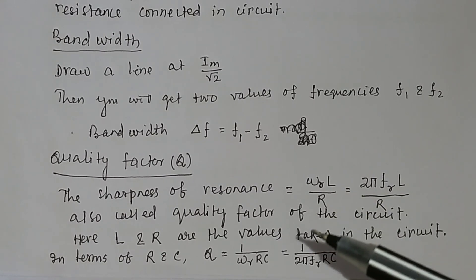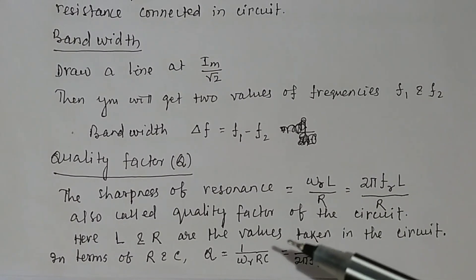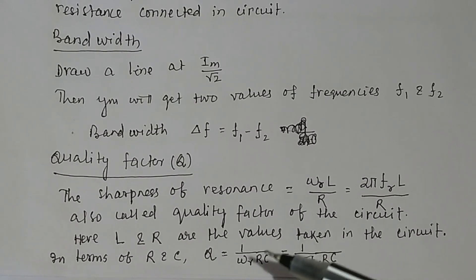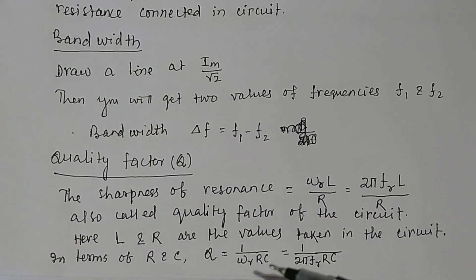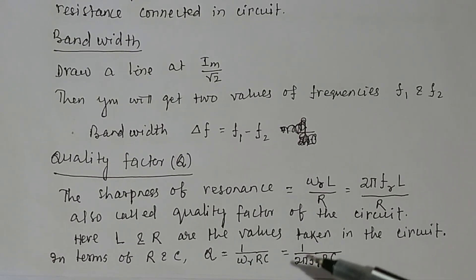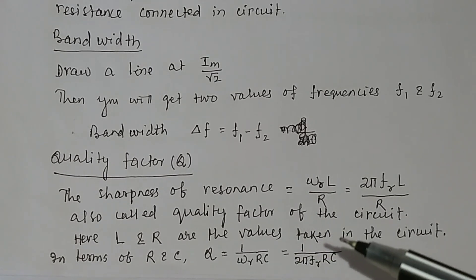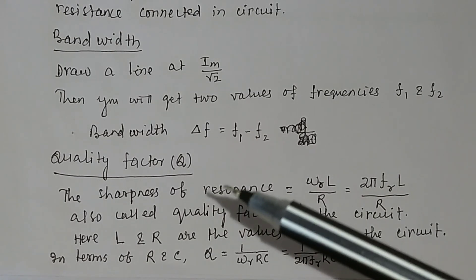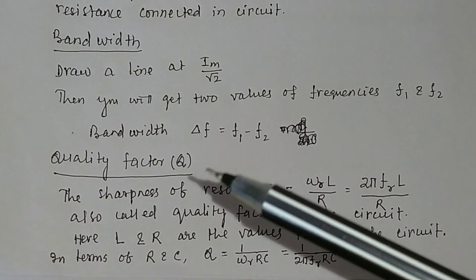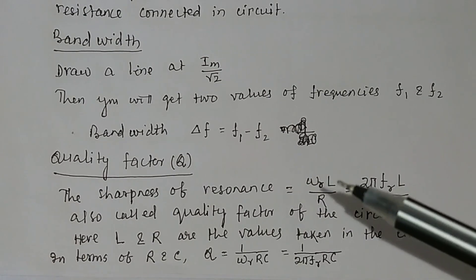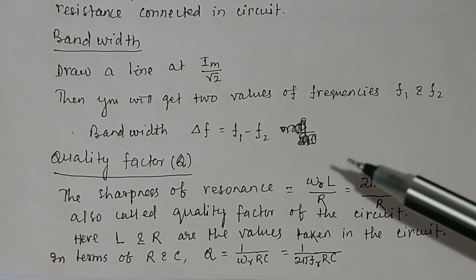You can also find the sharpness of resonance from the expression Q equals 1 divided by omega_R C. In terms of R and C, you can also find the quality factor as 1 divided by 2 pi F_R R C. Putting the values of F_R, R, and C from the given experiment, you can calculate the sharpness of resonance or quality factor. This equation has been derived in a separate video.